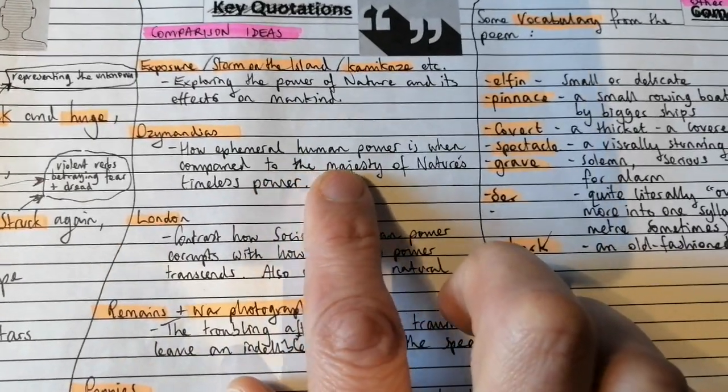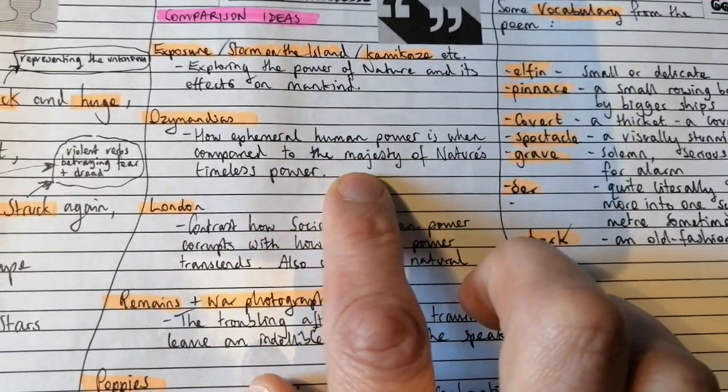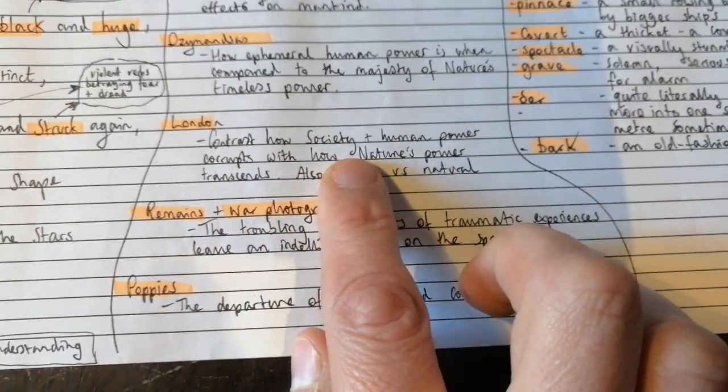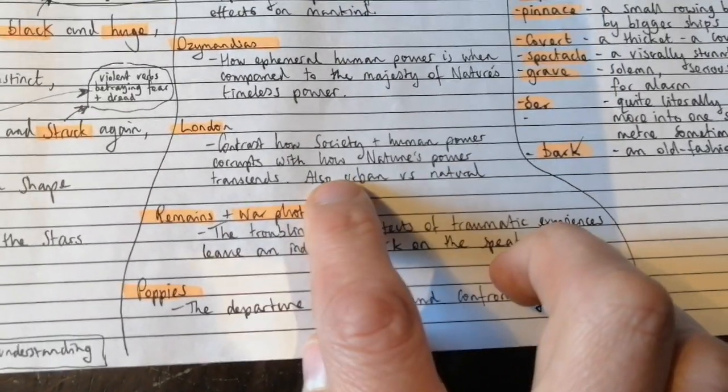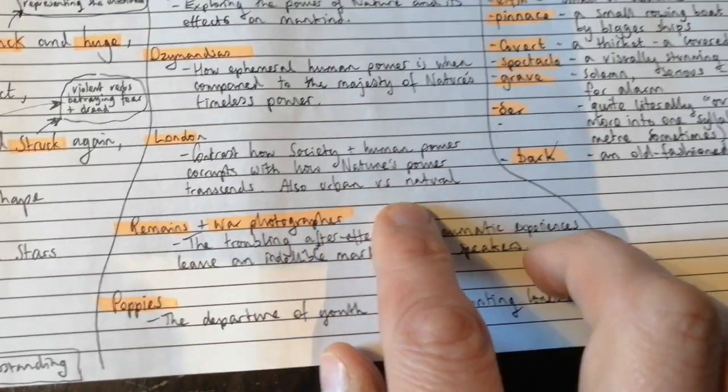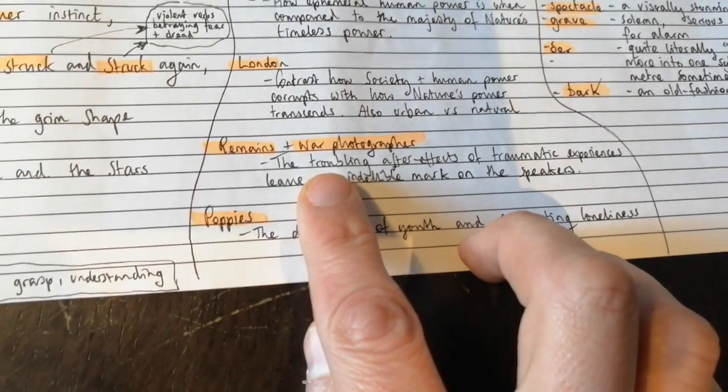Ozymandias, how ephemeral human power is when compared to the majesty of nature's timeless power. London, we can contrast how society and human power corrupts with how nature's power transcends and also the urban versus the natural settings.